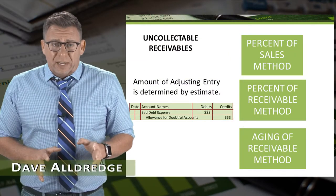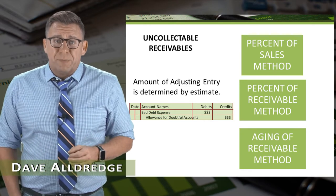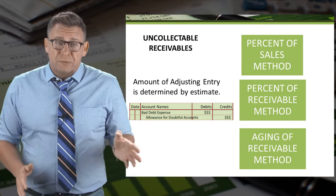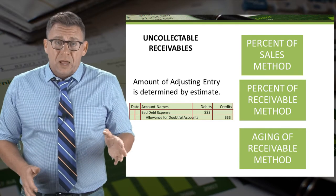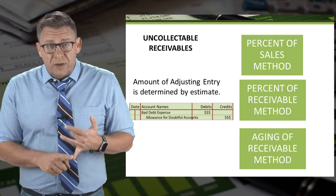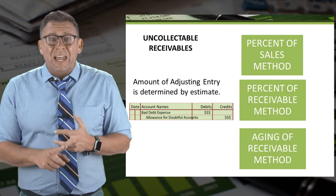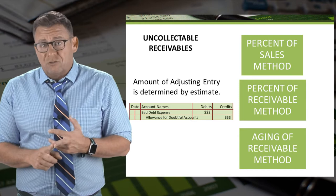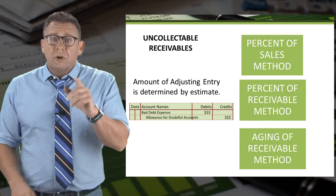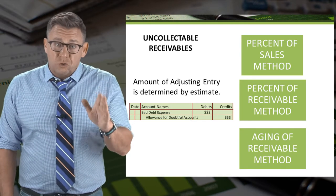There are three common ways to estimate the amount of bad debt expense to be recorded under the allowance method: the percent of sales method, the percent of receivables method, and the aging of accounts receivables method. We will learn about the percent of sales method in this short video.